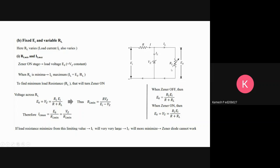When IL is maximum, E0/RL minimum equals Vz/RL minimum. Whenever there is a high resistance value, there is less load current.